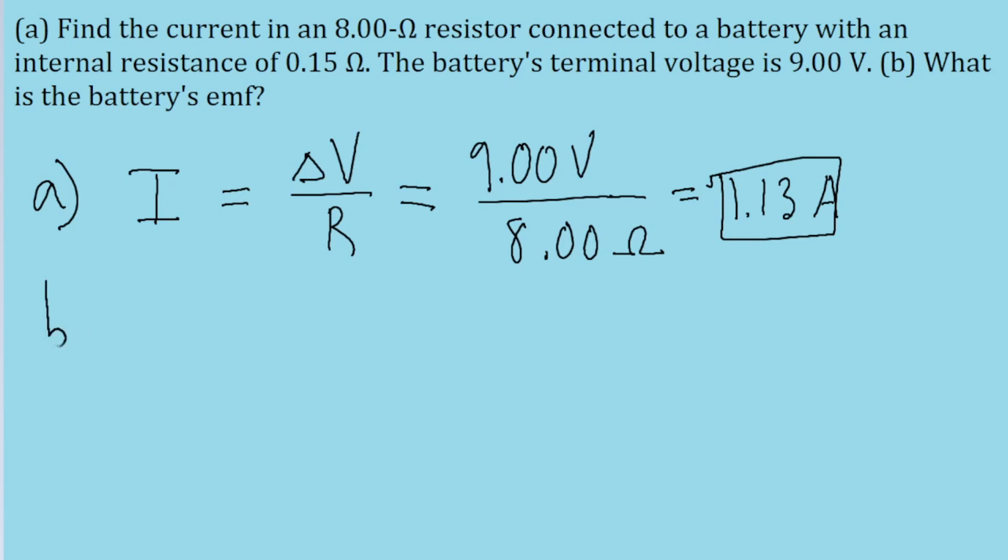Part B asks us about the battery's EMF. This time, we are concerned with the internal resistance because on top of the actual terminal voltage of the battery, there's going to be an additional voltage drop from the internal resistance of the battery itself.